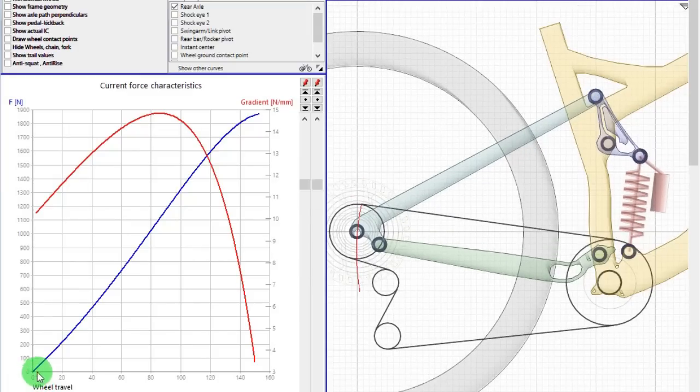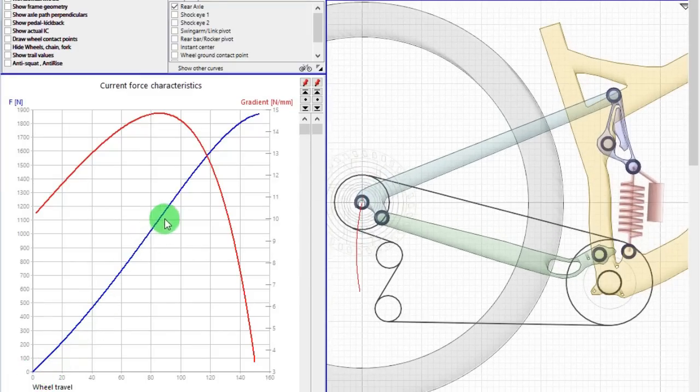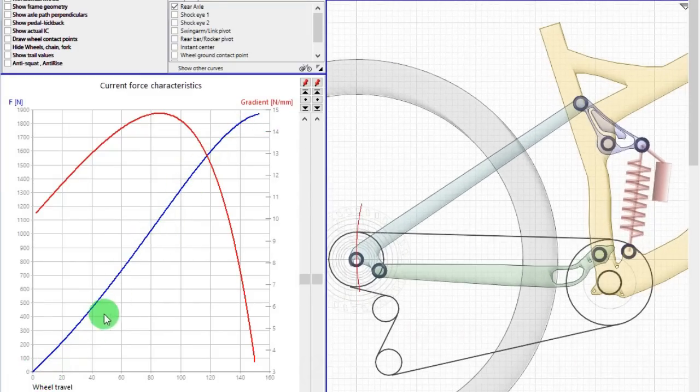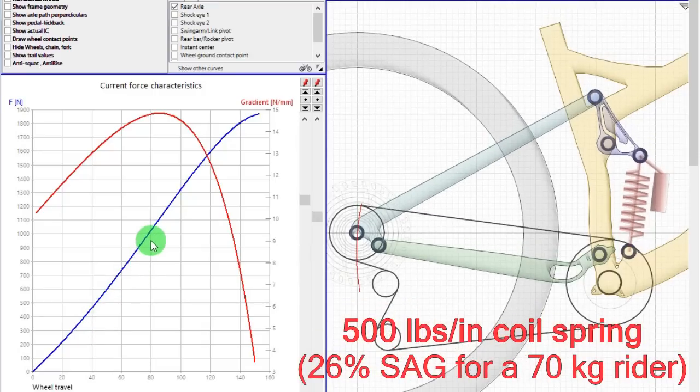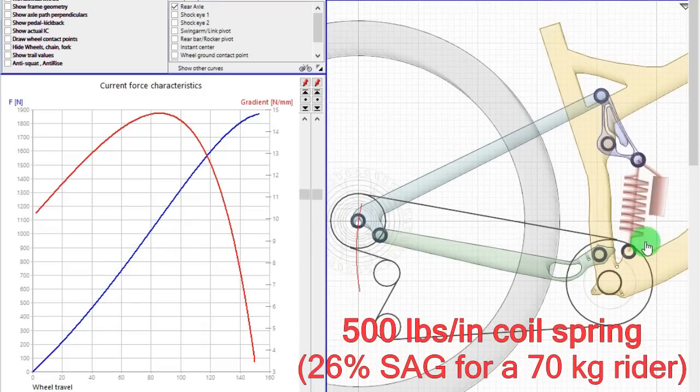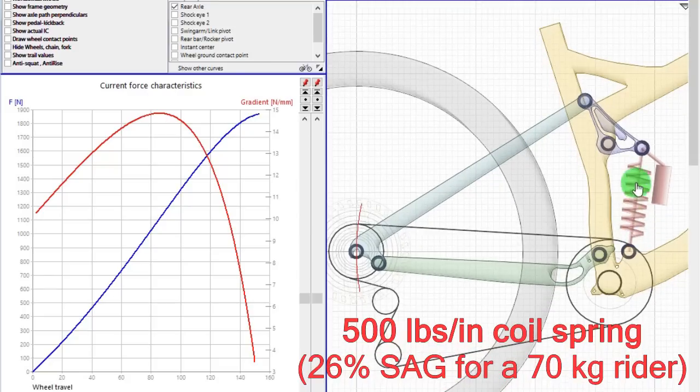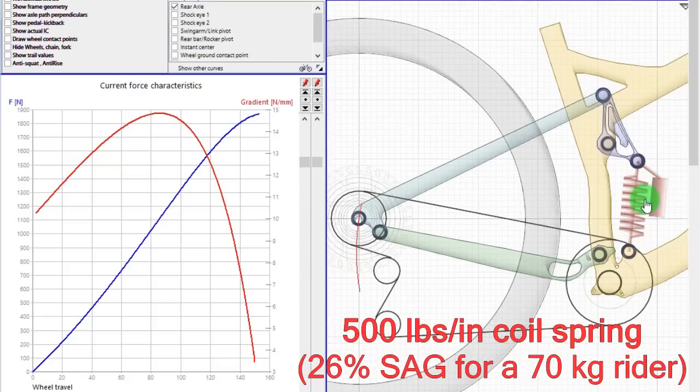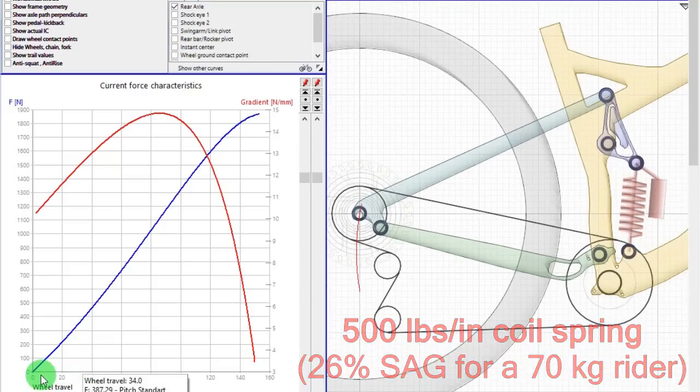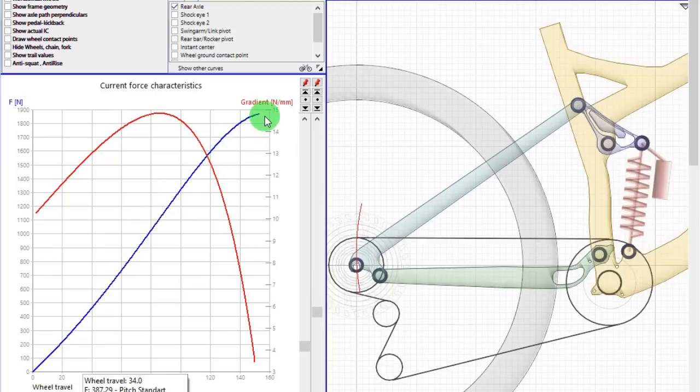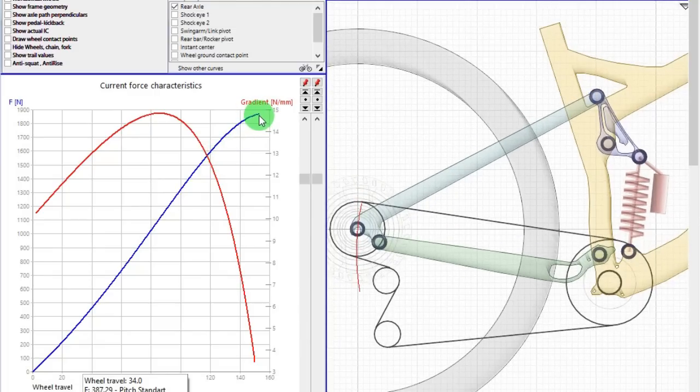This graph shows you the forces needed to compress a Specialized Pitch. In this case we have a 500 pounds per inch spring, which is indicated for a 70 kg rider. So let's see what happens for the different bikes.